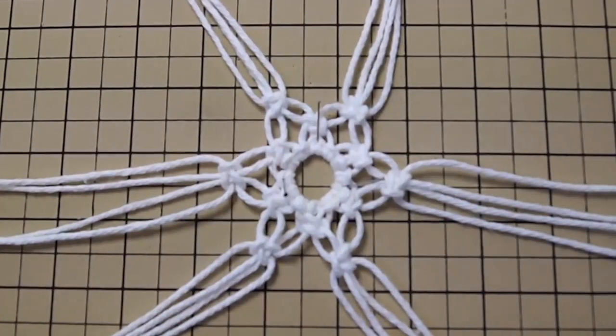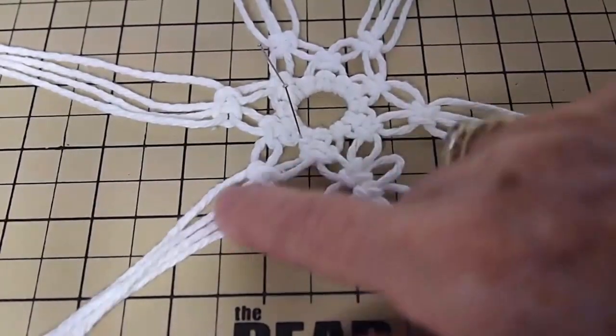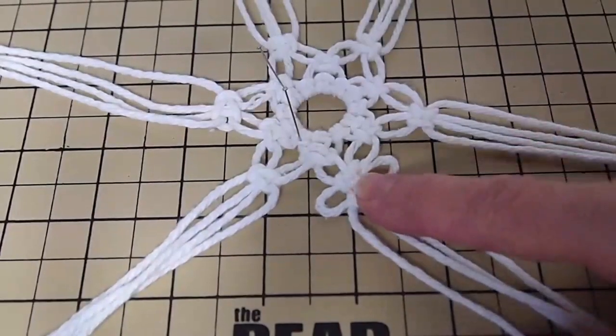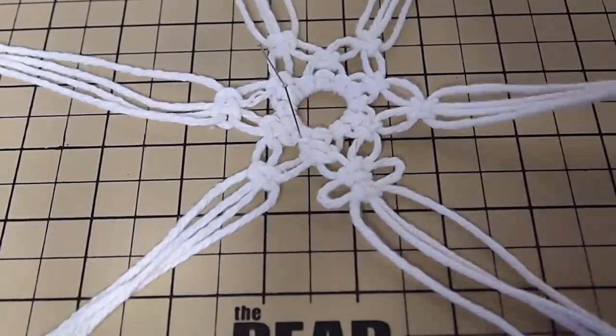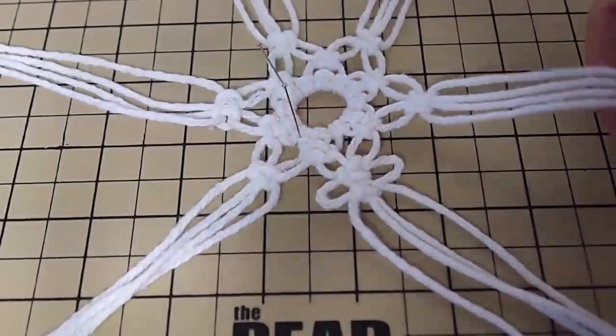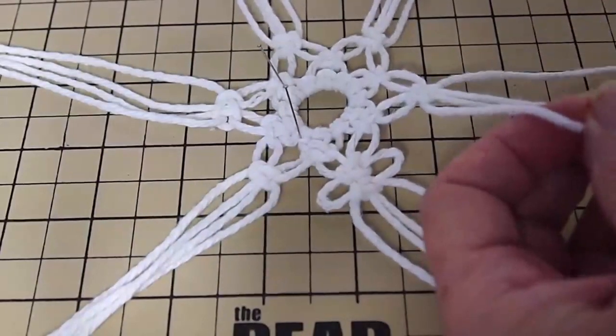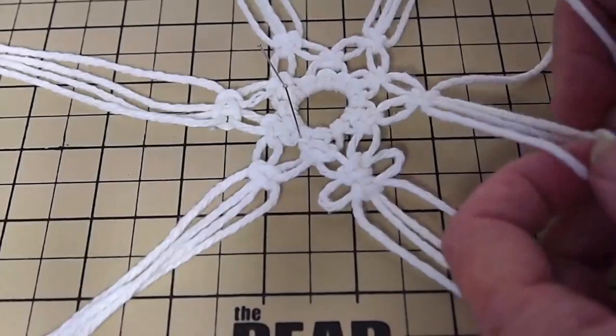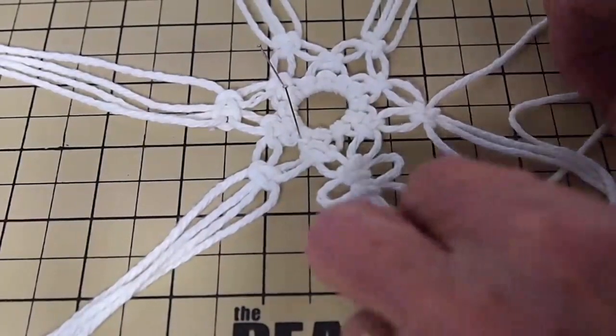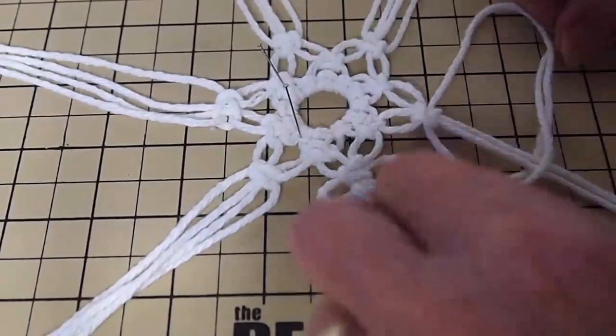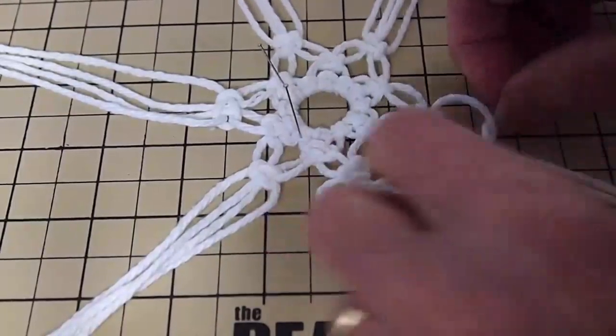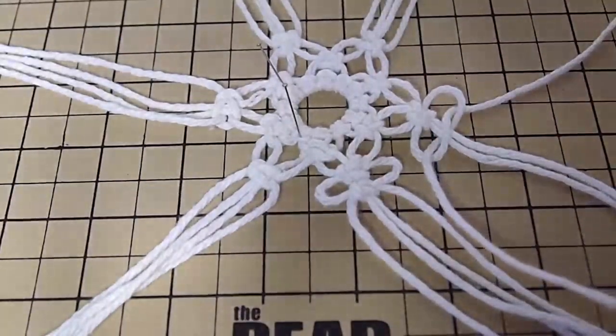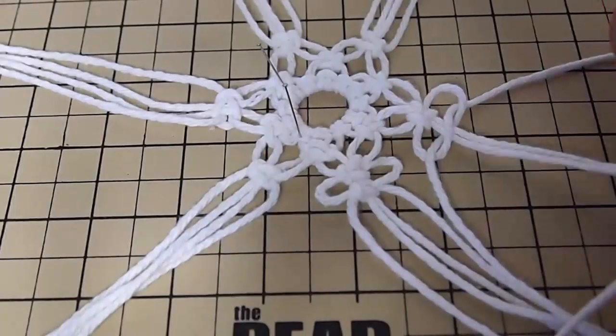This is what mine looks like so far and I'm kind of liking the way it's looking. Now I'm going to drop it down and create the little butterfly effect. You can see on the first one to the left of my hand there, now I'm working on the next one. We drop it down a little bit and then we're going to push it up to create the little wing or butterfly effect.